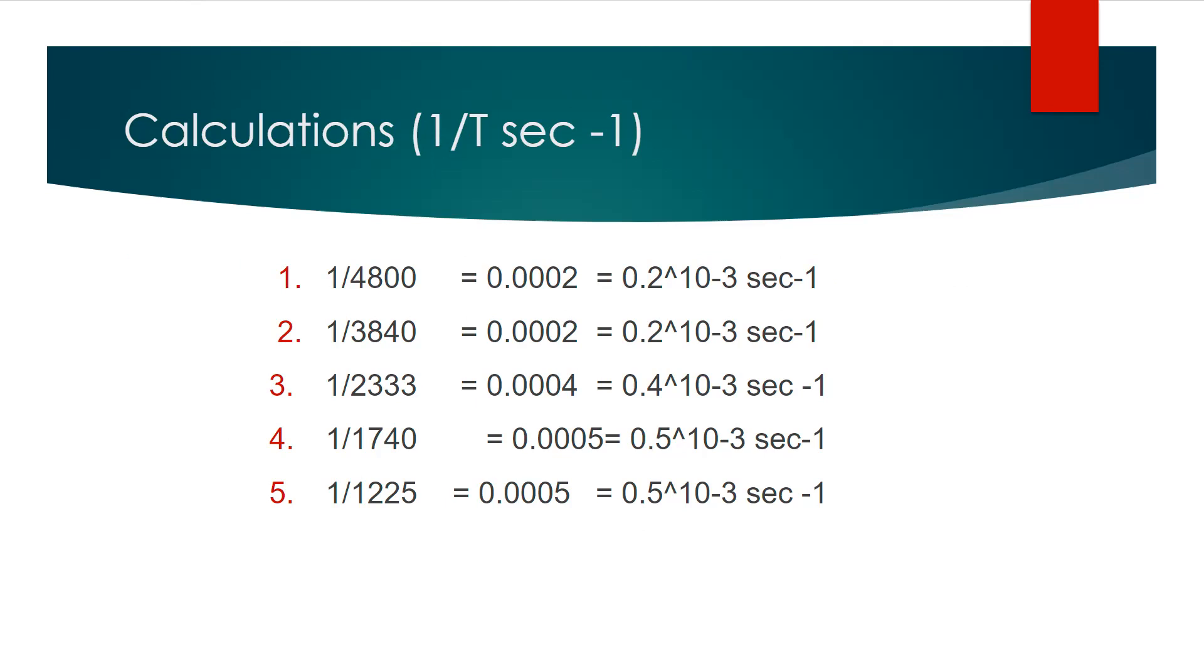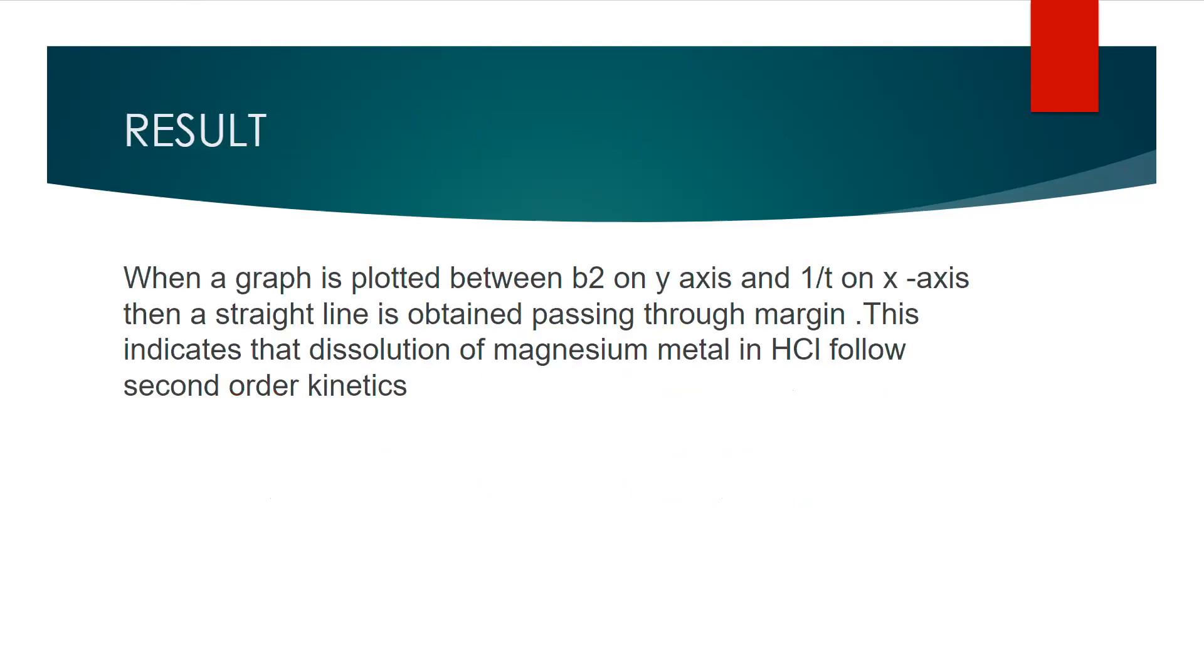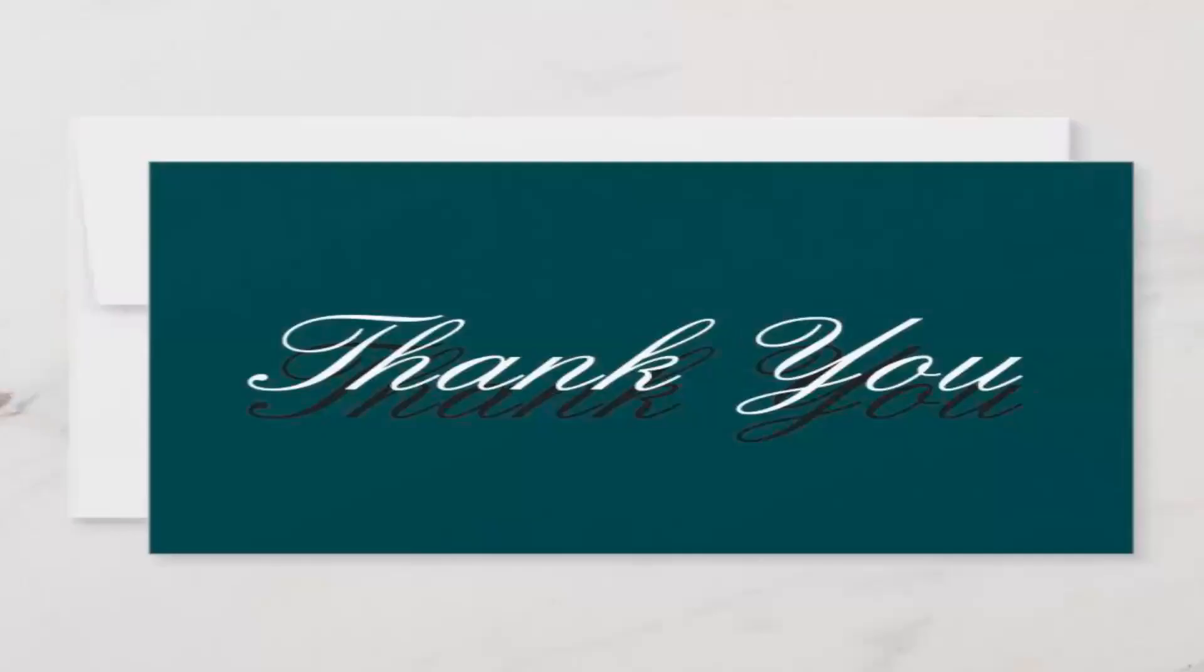As a result, when a graph is plotted between b² on the y-axis and 1/t on the x-axis, then a straight line is obtained passing through the origin. This indicates that dissolution of magnesium metal in hydrochloric acid follows second order kinetics. Thank you.